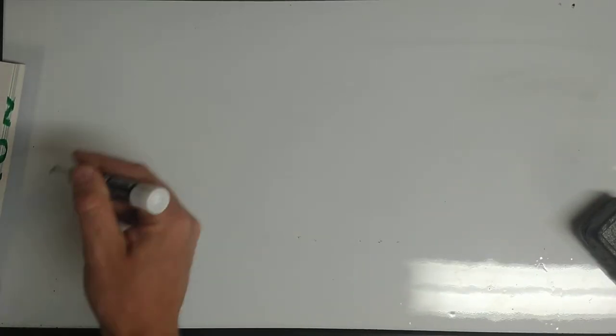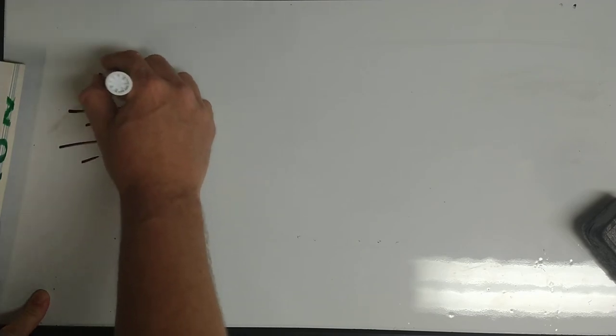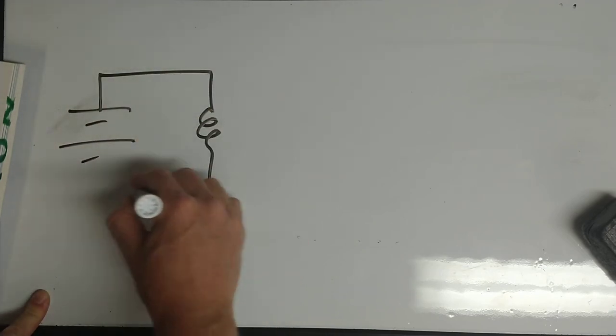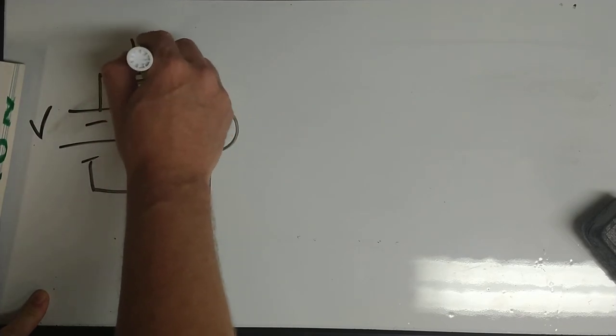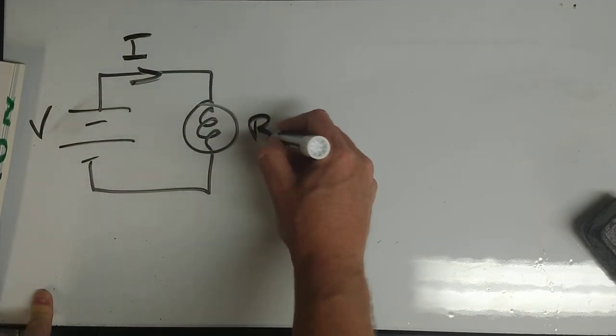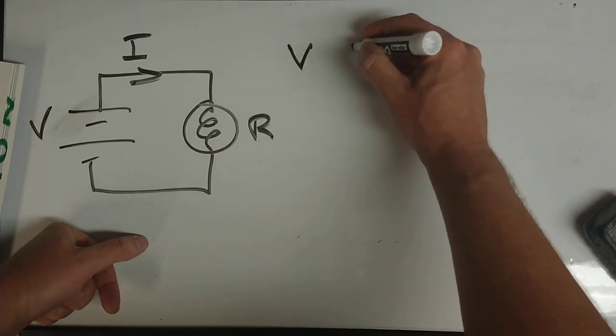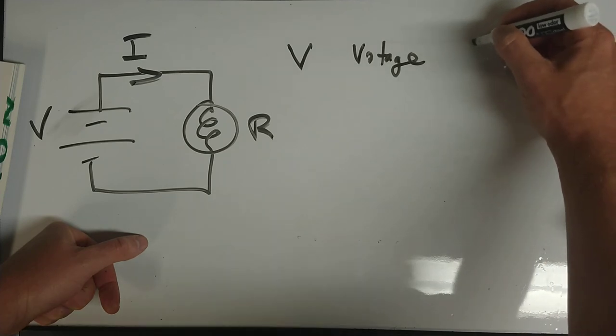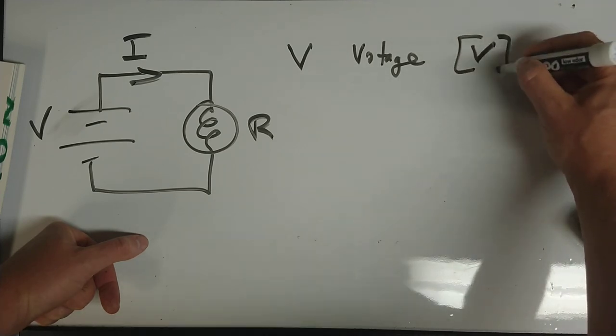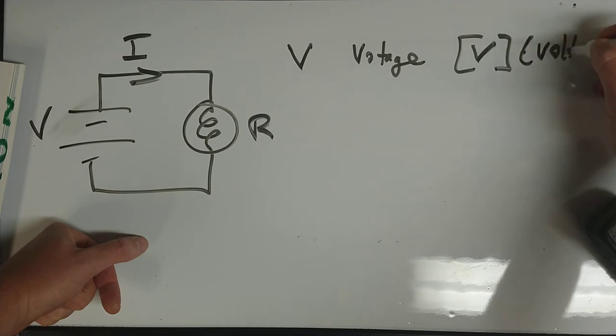All right. So we've got a battery. I'm going to redraw the bulb. It's got a V that drives current I and the bulb has a certain resistance R. So the symbol here V represents voltage and the units are also V or volts, which are a joule per coulomb.